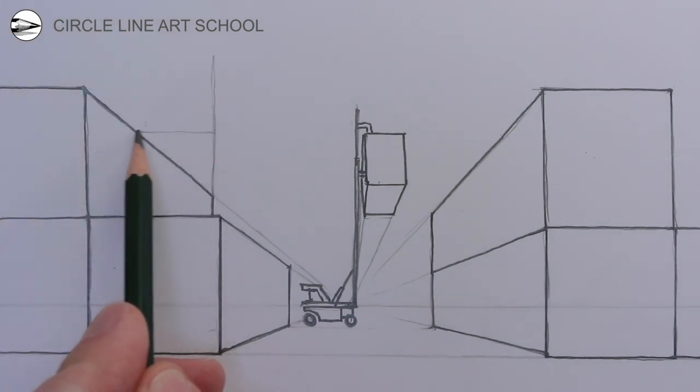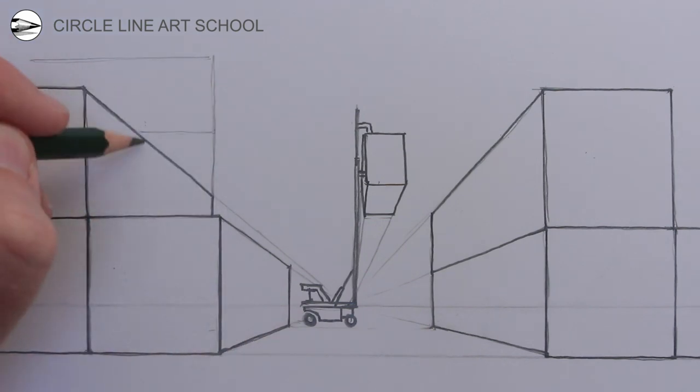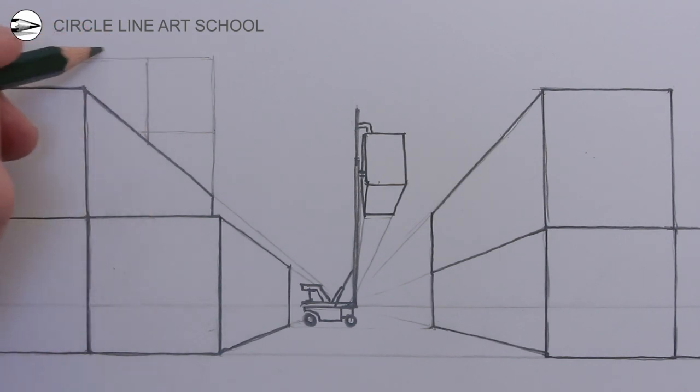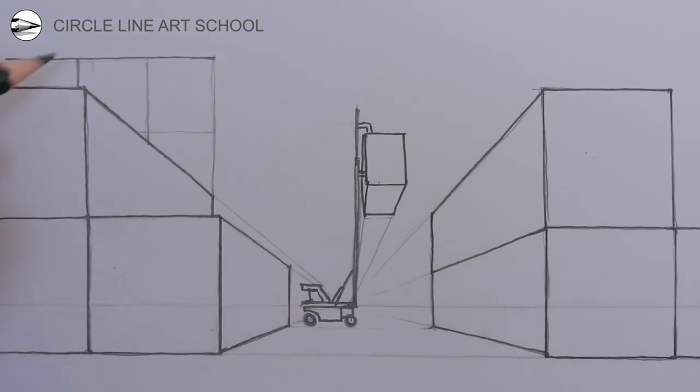Try to make each of the rectangles of the fronts of the containers the same proportion as the others, and the proportion is slightly taller than they are wide. As you draw along you could darken the lines that you need, and erase the guidelines that you no longer need.